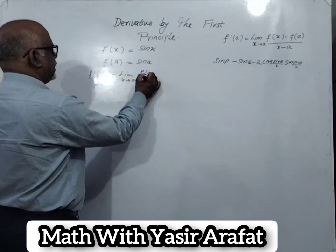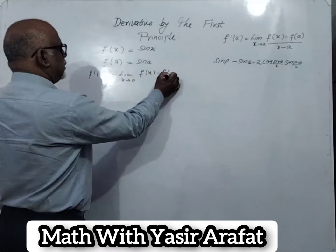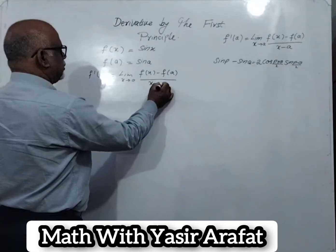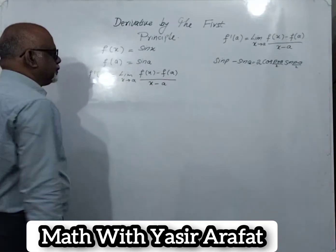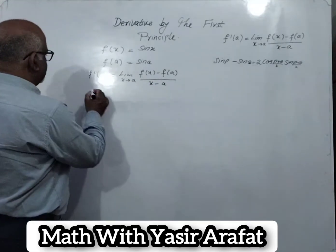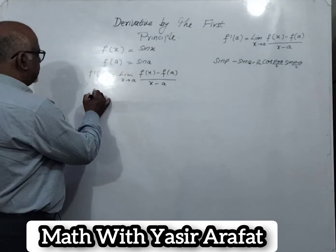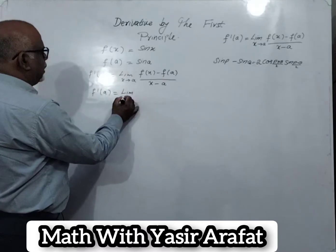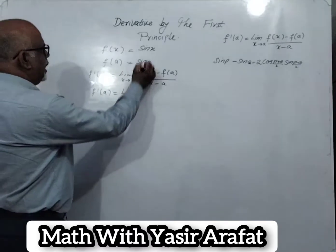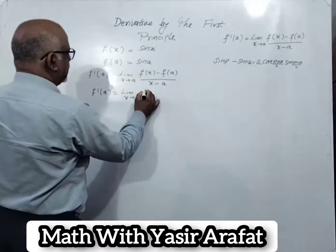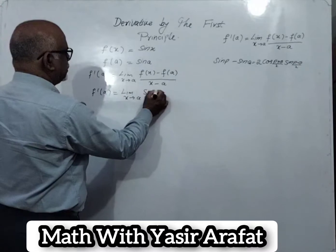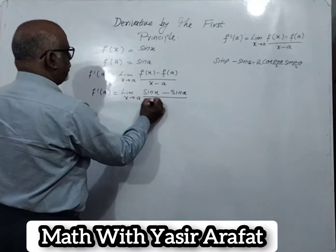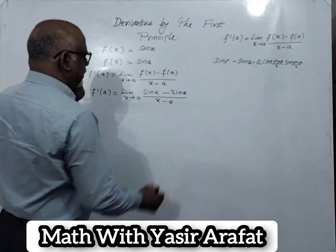So this is f of x minus f of a divided by x minus a. We just have to put the values here. That is: limit x tends to a, f of x is sin x, f of a is sin a, whole divided by x minus a.